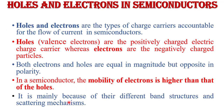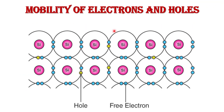The mobility of electrons is higher than that of holes because of their different band structure and scattering mechanism. Electrons travel in the conduction band whereas holes travel in the valence band. When an electric field is applied, holes cannot move as freely as electrons due to their restricted movement.